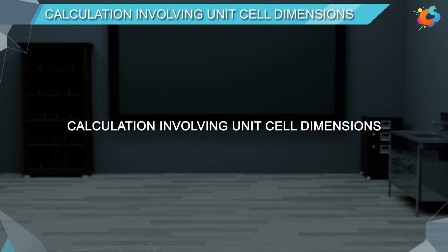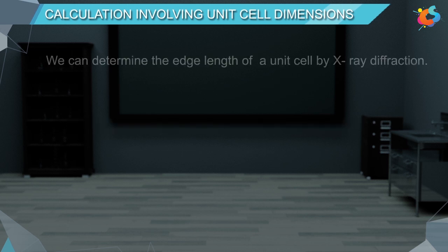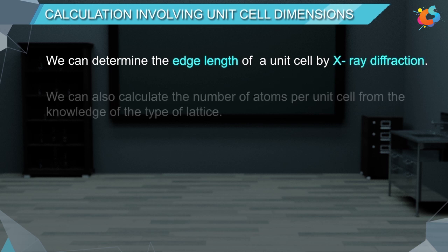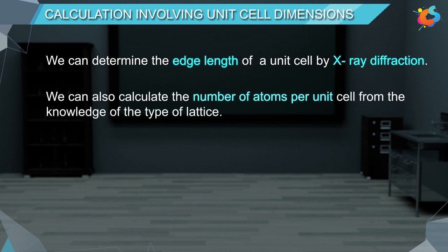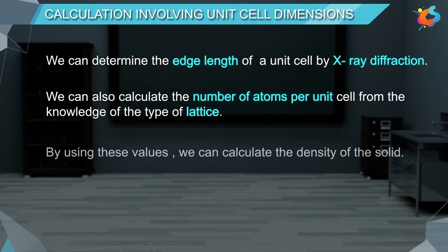We can determine the edge length of a unit cell by X-ray diffraction. We can also calculate the number of atoms per unit cell from the knowledge of the type of lattice. By using these values, we can calculate the density of the solid.